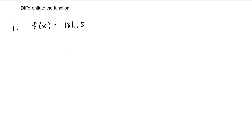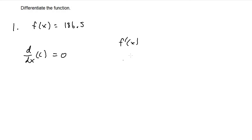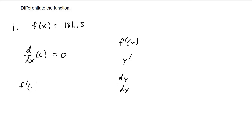For this next set of problems, let's differentiate the function. For number one, we have f of x equals 186.5. Since 186.5 is a constant, and the derivative of any constant is always zero, we can write f prime of x equals zero. There are several ways to write this — f prime of x, y prime, or dy dx — but since it's in the form f of x, we write f prime of x equals zero.